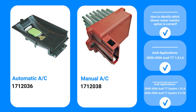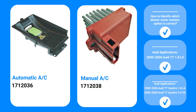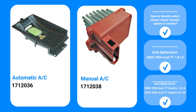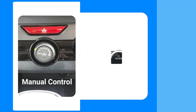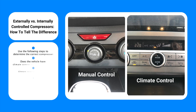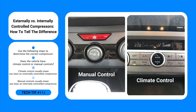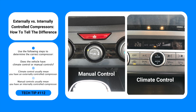How to identify which blower motor resistor option is correct: determine if the vehicle has manual or automatic climate control. Refer to GPD Tech Tip 112 for a depiction of manual versus automatic climate controls.